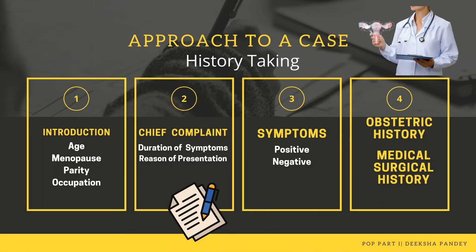While taking a history of a case of prolapse, there are four main headings we have to work on. The first is introduction, where four things are important: age, menopause, parity, and occupation. When asking for chief complaints, the focus should be on the duration of symptoms and the reason why the patient has come to us with this symptom today. Symptoms — both positive and negative — have to be asked. Then we have to ask about obstetric history, medical history, and surgical history.